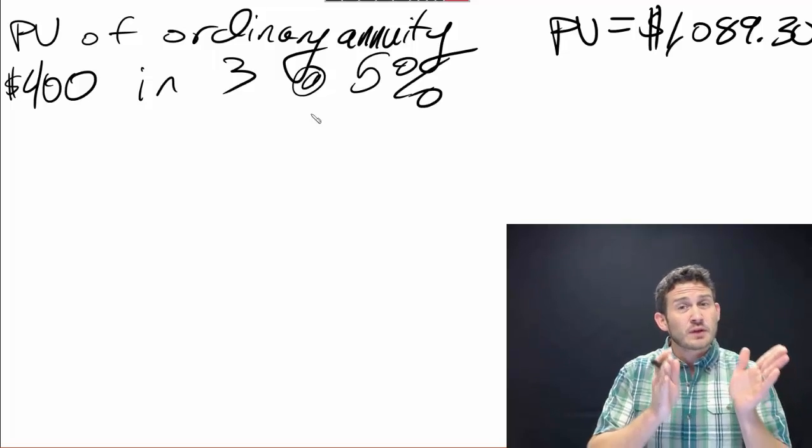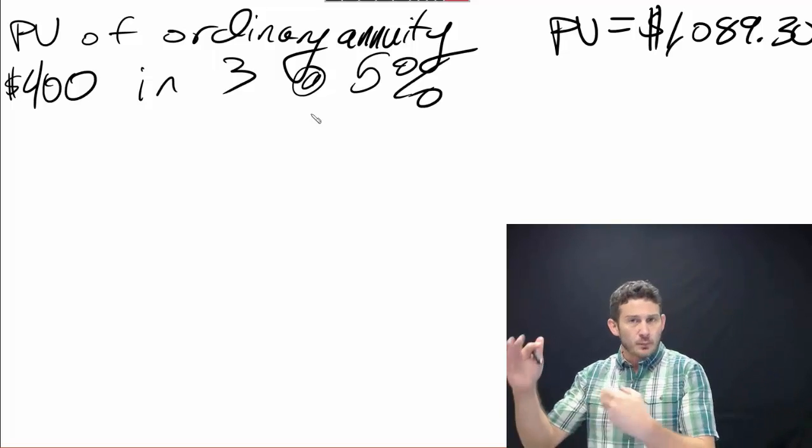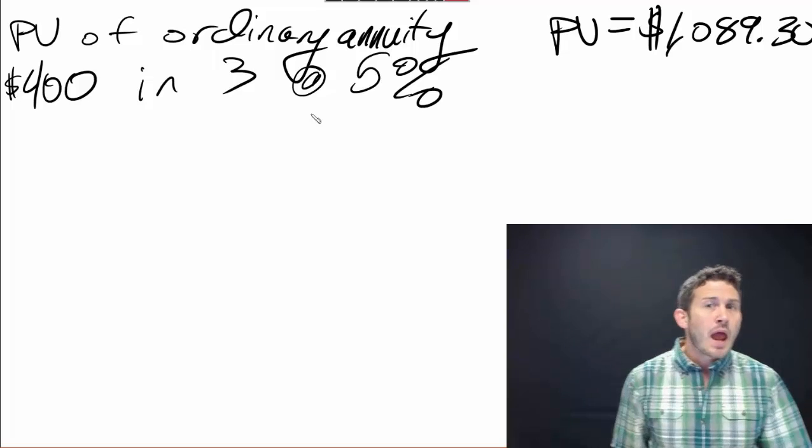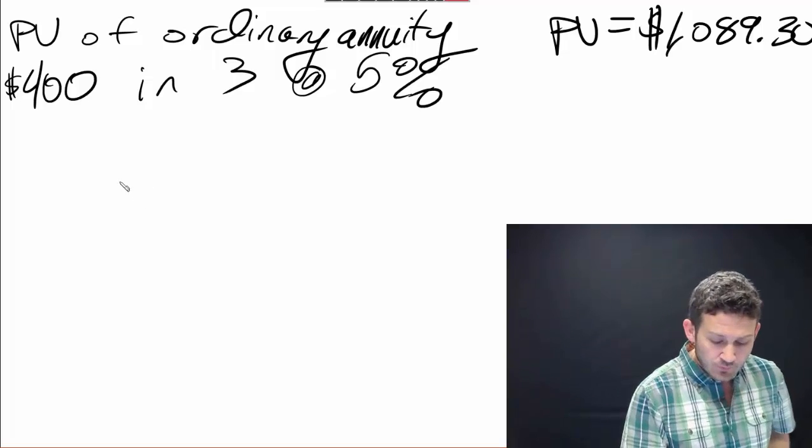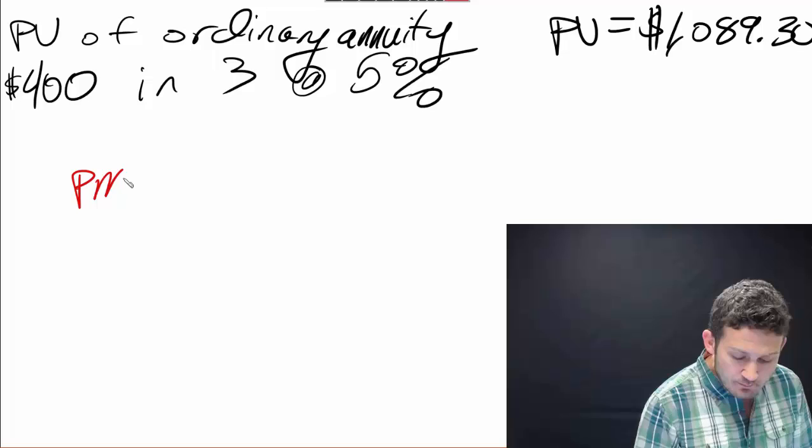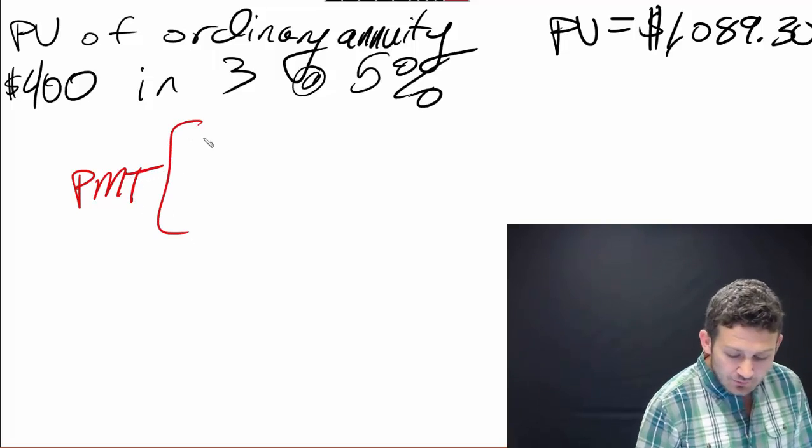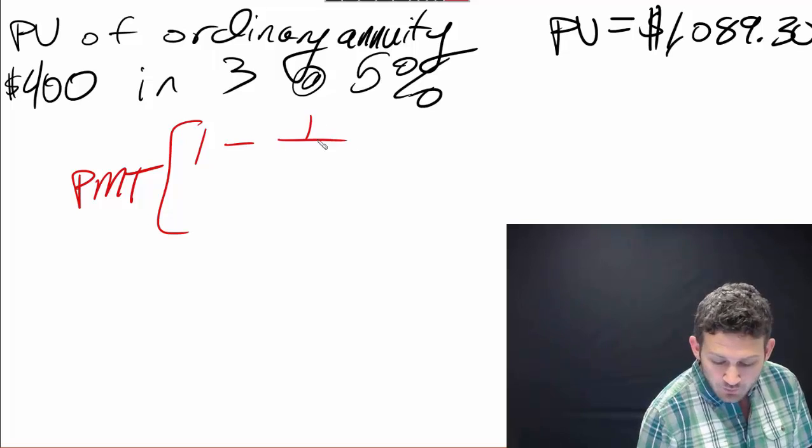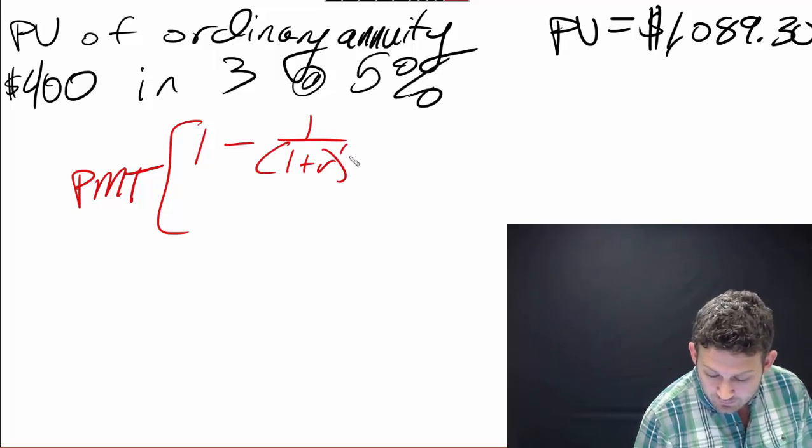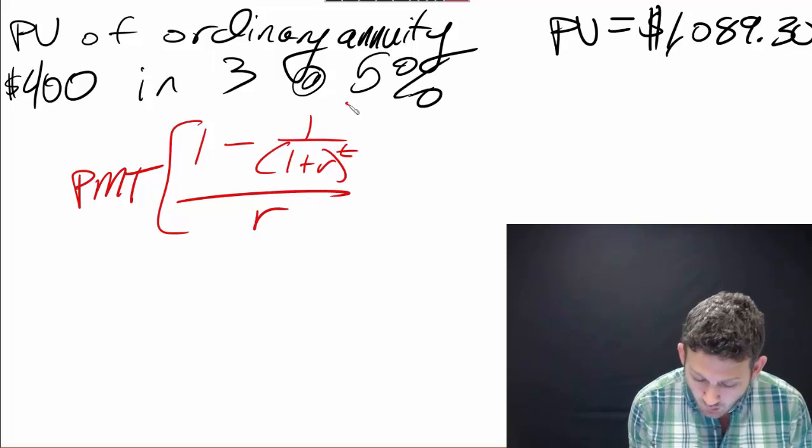We don't have to necessarily do each individual payment. If we're going to put this into an equation format, there is another equation we can use. We have the amount of our payments multiplied by (1 minus 1 over (1 plus r) to the number of time periods) over r.